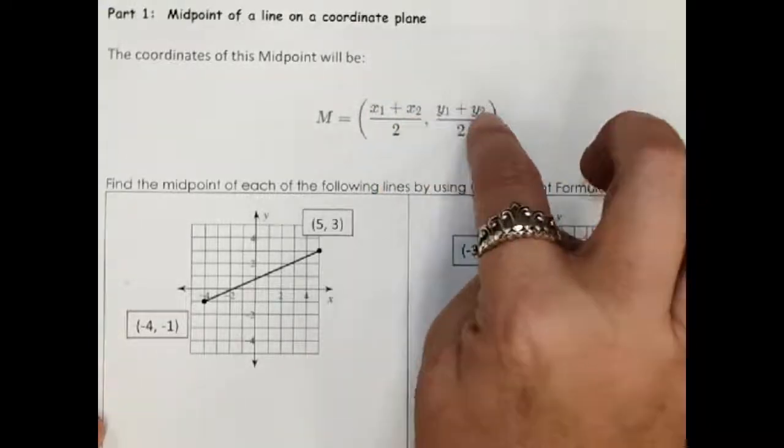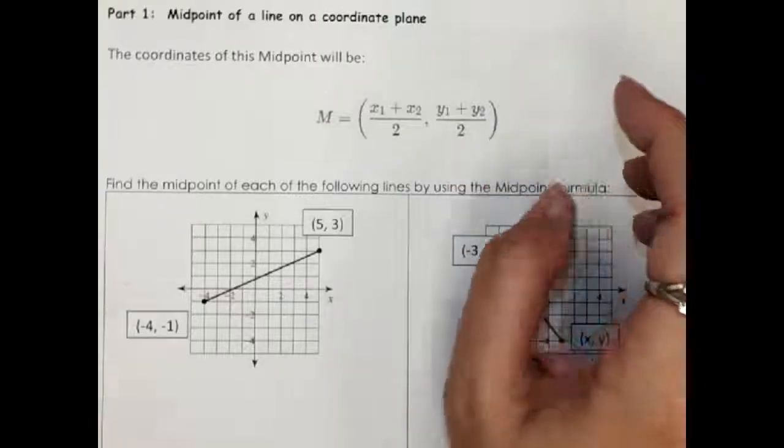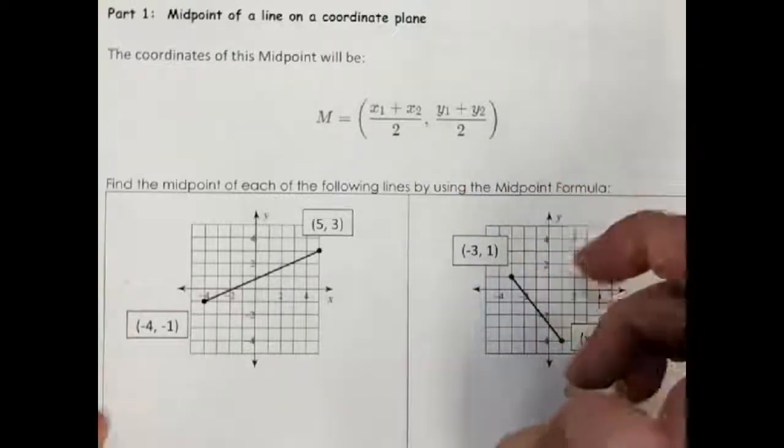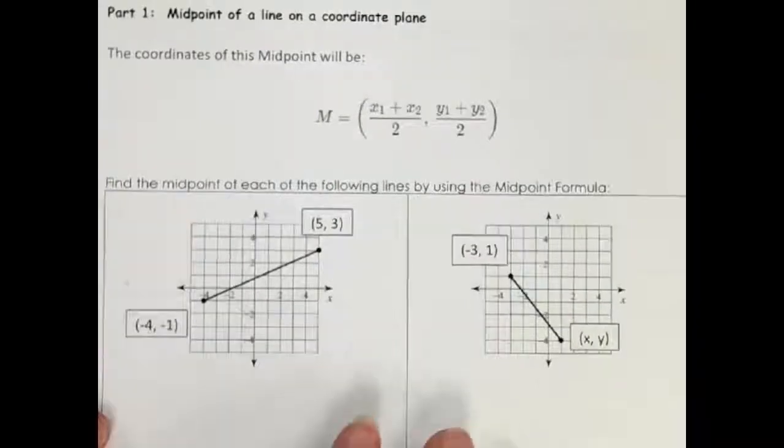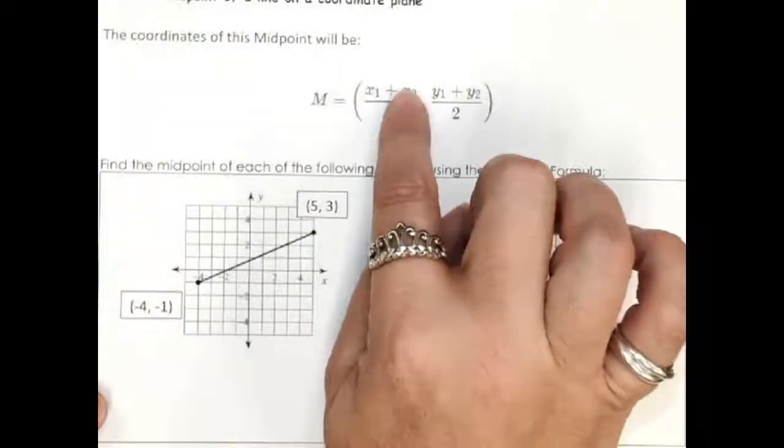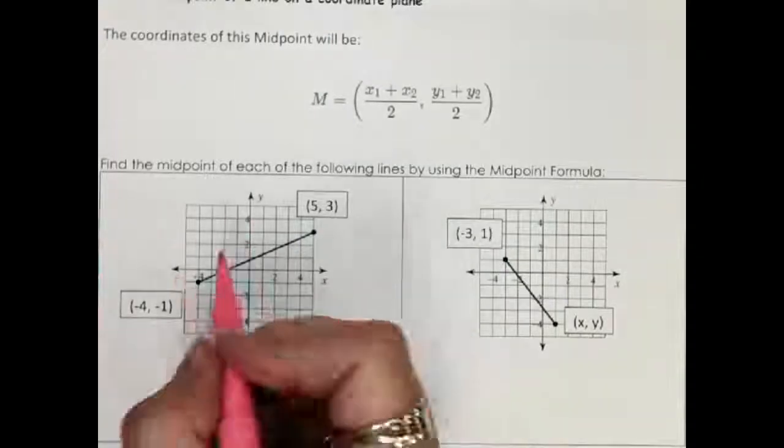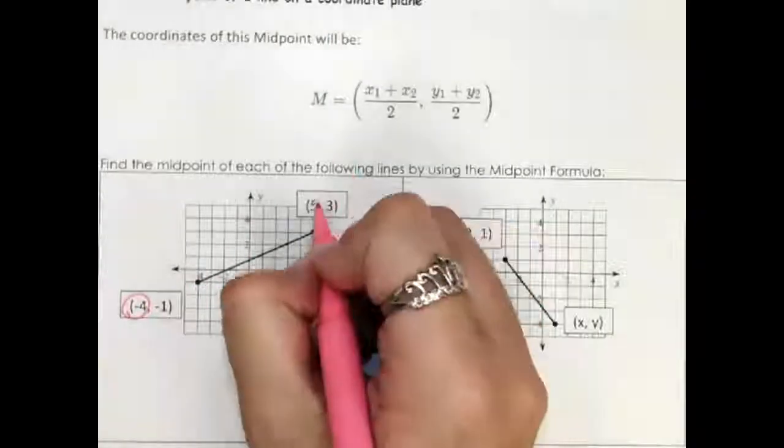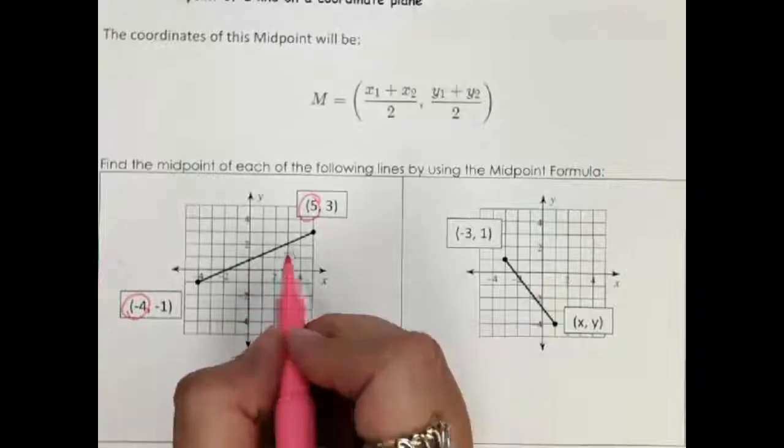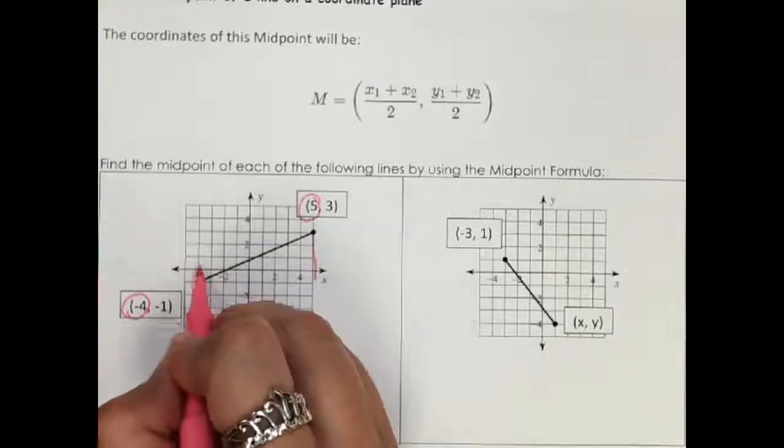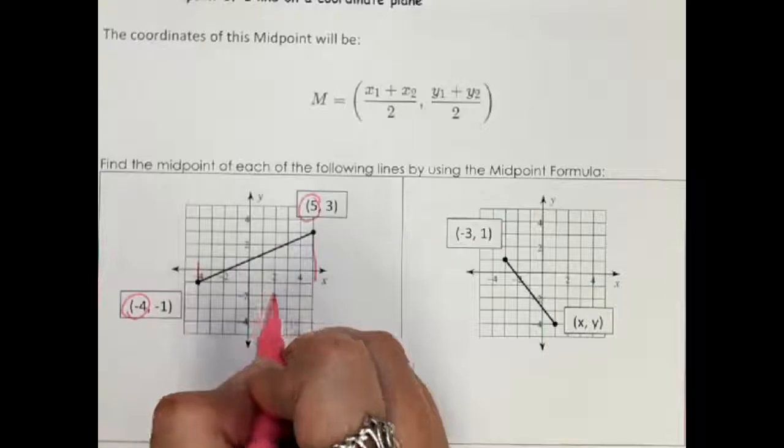Since we're adding, it doesn't even matter the order, you just have to make sure you're careful with negatives. So let's just look at what this looks like. Here we're going to take the x's and divide by two. So on our graph, what we're doing is we're taking this x and this x and we're finding the middle between here and here for where our point's going to go.